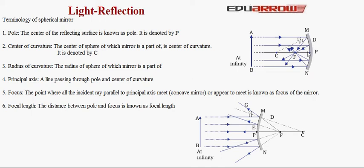Fifth, and the most important, is focus. The point where all incident rays parallel to the principal axis meet — in case of concave mirror — or appear to meet — in case of convex mirror — is known as the focus of the mirror. In concave mirror, rays parallel to the principal axis meet at point F after reflection. In convex mirror, the reflected rays appear to meet at a point when extended backward; they do not actually meet, as shown by the dotted line. This point F is the focus in case of convex mirror.